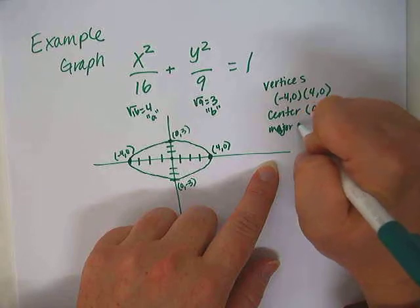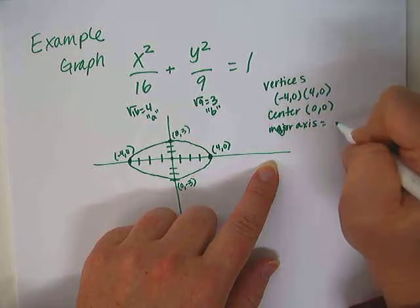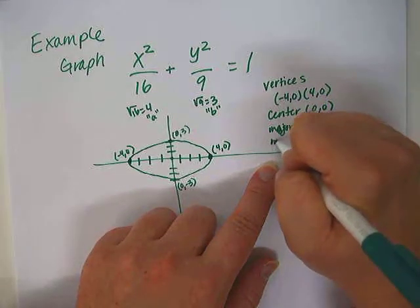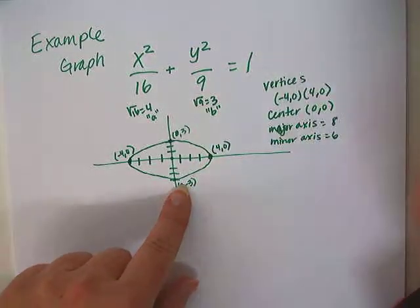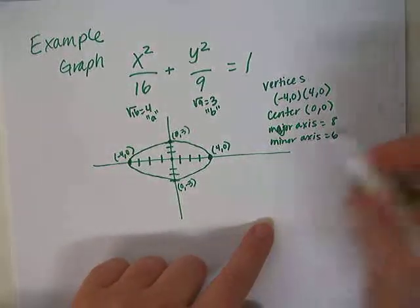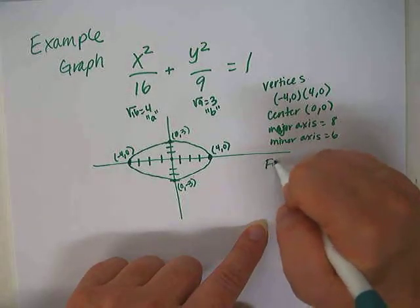If you want to, you could give the length of the major axis. How long is the major axis? 8. How long is the minor axis? 6, because it's twice the length of that distance, right?